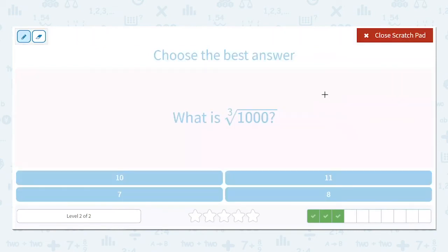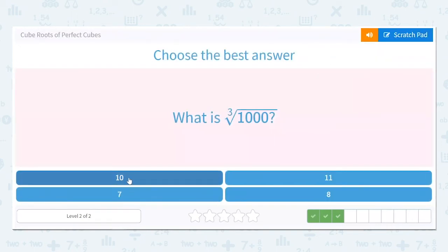All right. A little easier for us here. What is the cube root of 1,000? Well, 1,000 is 10 times 100. And 100 is a perfect square. It is 10 times 10. So a number used three times in multiplication. In this case, 10. The cube root of 1,000 is 10.